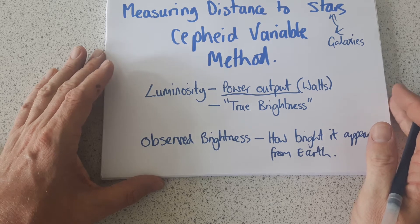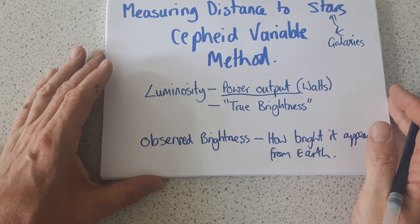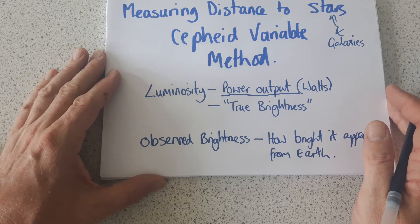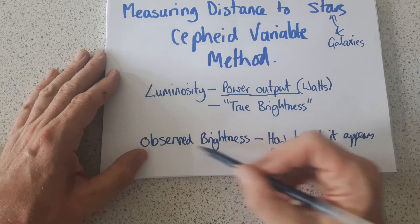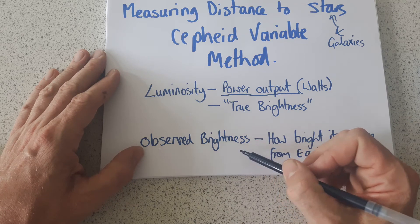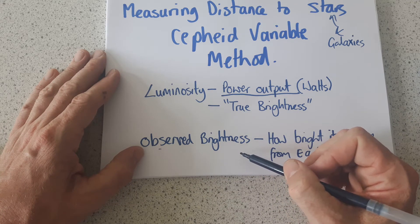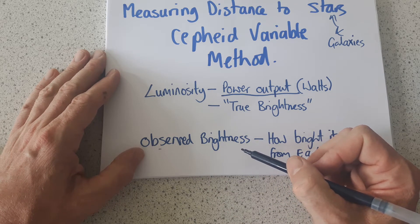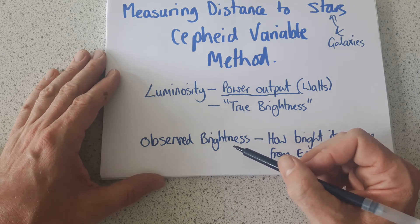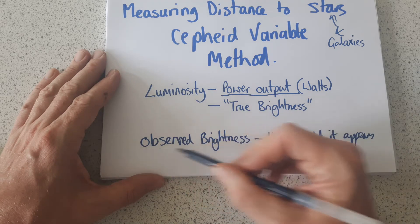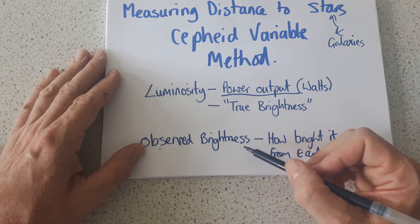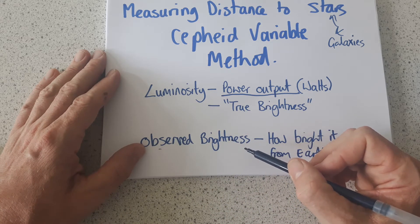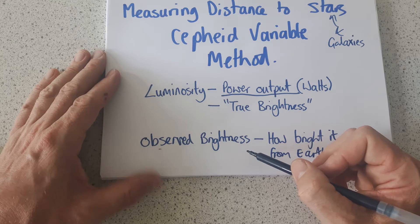For example, the sun has a very high observed brightness because it's very near to us, whereas something like Polaris, the polar star, has a much lower observed brightness, presumably because it's much further away.